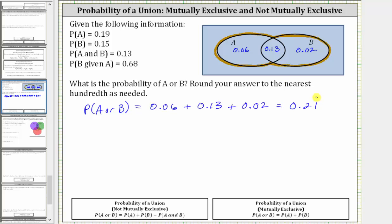But let's also find this probability using one of the formulas below. Notice how we do have a probability for A and B, which means that two events are not mutually exclusive because they can occur at the same time. If the events were mutually exclusive, they could not occur at the same time, and the probability of A and B would be 0.